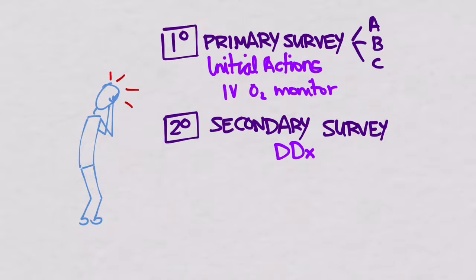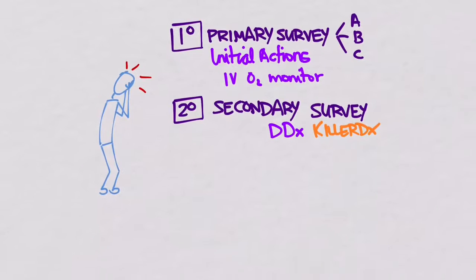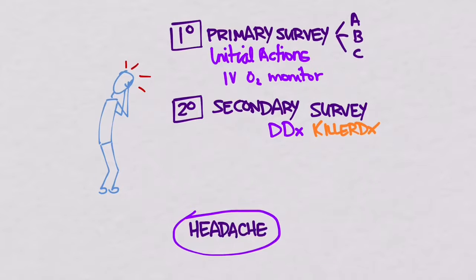And remember that the differential diagnosis, yeah, it'll probably have migraine and tension headache on that, but that's not what we're looking for. We're looking for the killer diseases, the killer diagnoses. You want to have a pretty comprehensive list of things that are going to kill anyone who comes in with a headache. So what would you put on this list?